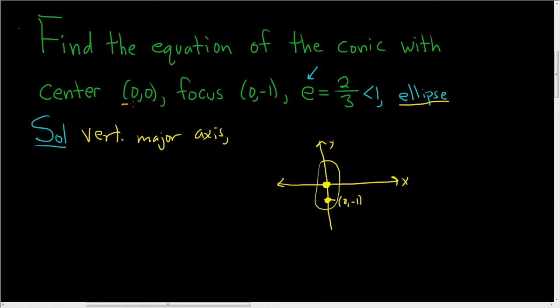Because the center is (0,0), the general equation is going to be x squared over b squared plus y squared over a squared equals 1. And here a is bigger than b. So whenever the vertical axis is major, the a goes under the y, the bigger number goes under the y.